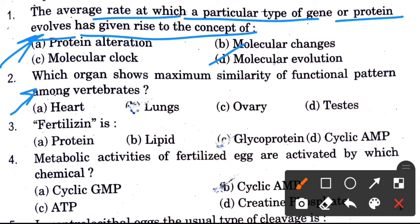Next question: Which organ shows maximum similarity of functional pattern among vertebrates? The options are heart, lungs, ovary, and testes. The answer is the lungs.